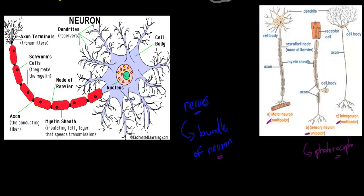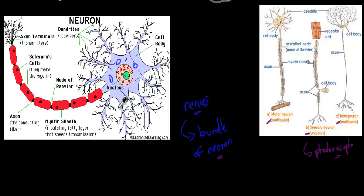What is a neuron generally made up of? All three types have a few things in common. They generally have a cell body, which is where the nucleus is. The nucleus is obviously important — even though neurons don't actually replicate, they stay the same the whole time. The nucleus is still used to make different proteins that the cell needs. The cell body also has mitochondria, which are there for ATP synthesis.